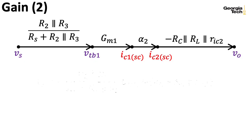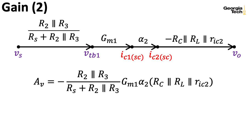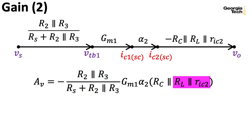To compute the small signal voltage gain, multiply all the factors from the Mason flow graph together. If RS is zero, the voltage divider term goes to one and can be ignored. If RIC and RL are also infinite, you're left with GM1 times alpha2 times RC. Since alpha2 is often close to one, the result is approximately GM1 times RC — basically the gain you get from a common emitter — though there may be some weirdness hiding in the formula for GM1.